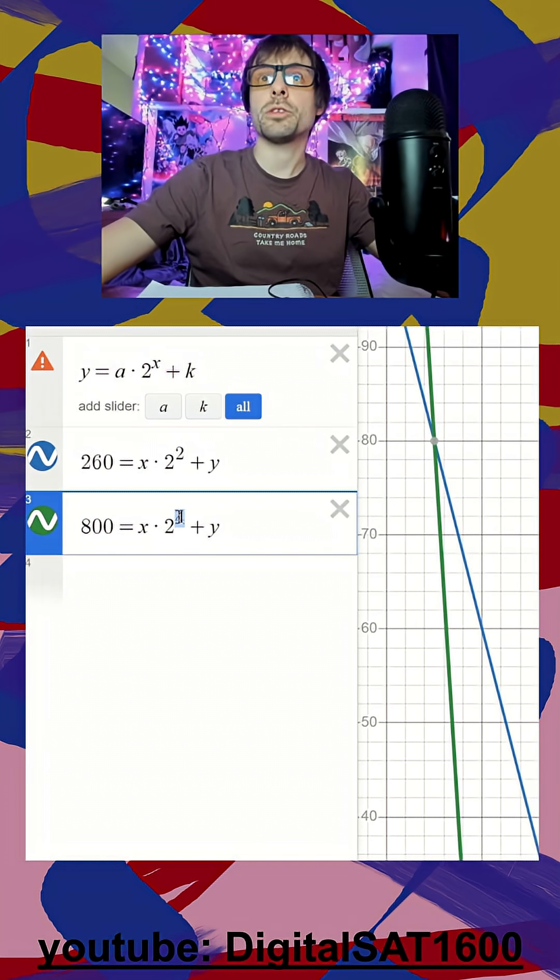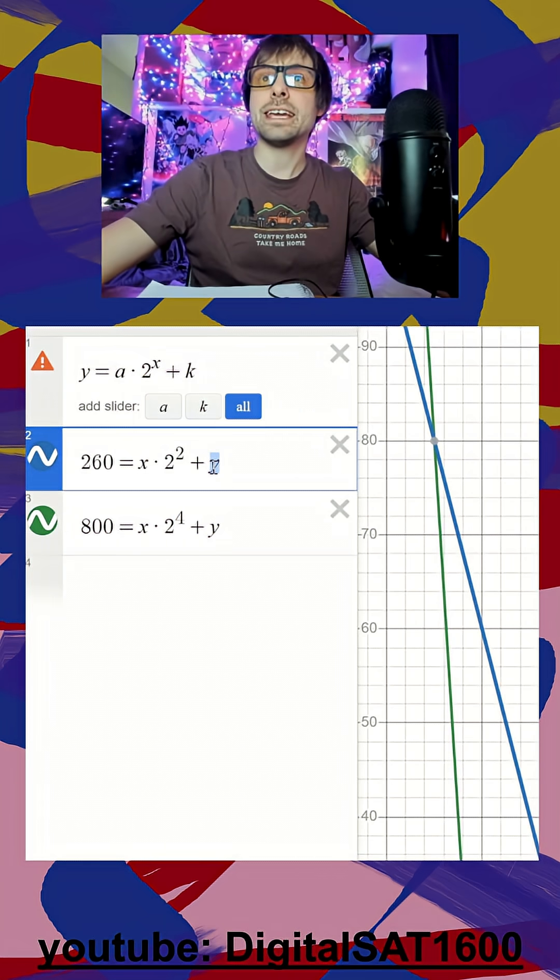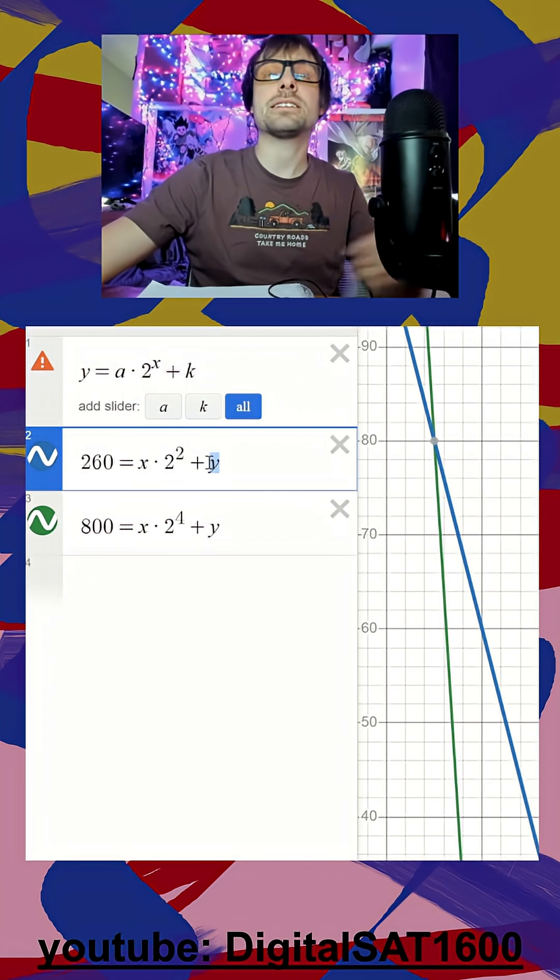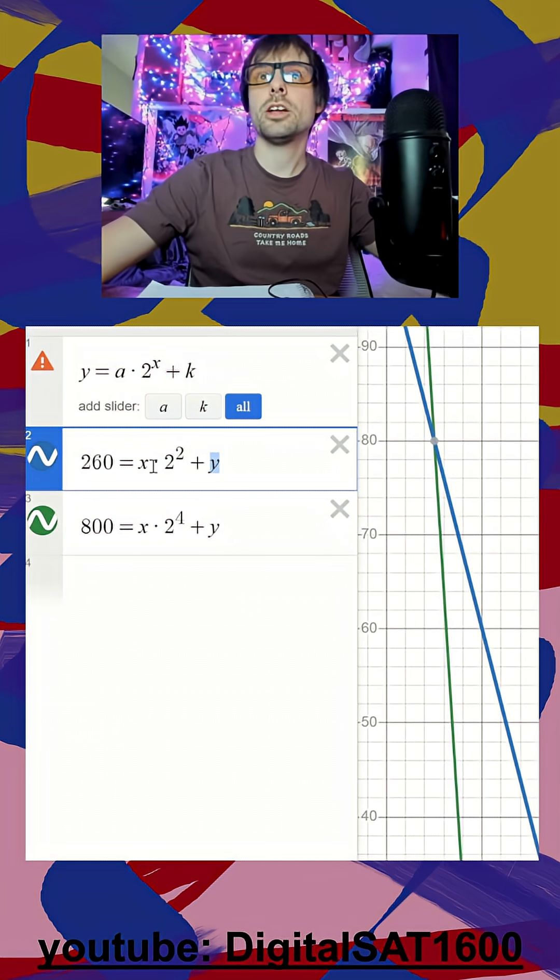I replaced my x with my two x values and then instead of having a and k in our equation, Desmos likes to solve for x's and y's. So I just replaced my a and k with x and y.